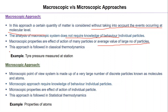The macroscopic effect is the averaging of the action of many particles, and this system is studied as classical thermodynamics. An example is tire pressure measured at a station — the pressure shown is the average pressure of all the air particles filled inside the tire.